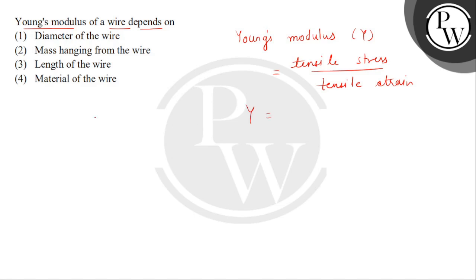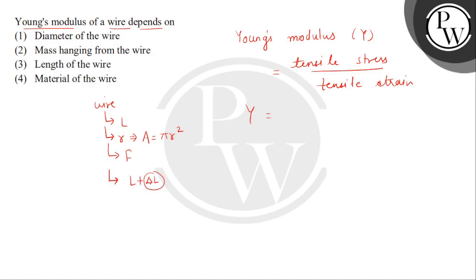If we take a wire whose original length is L and its radius is R, so its area of cross section will be pi R squared. We apply a force F on this wire, and after removing it, when we check its length, the length becomes L plus delta L — meaning delta L is the change in length.